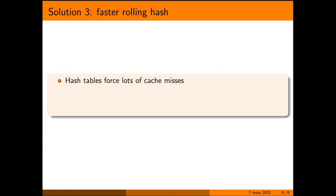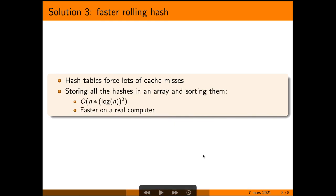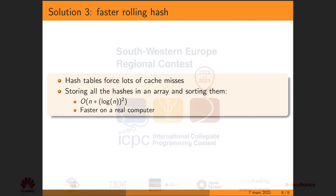However, you have a solution which is even faster, because hash tables force lots of cache misses. So if instead of a hash table, you store all the hashes in an array and you sort them, theoretically it's slower, but in practice it's faster. So that's what I love about this problem - you have three completely different solutions, and the fastest is not always the one that is the fastest theoretically.